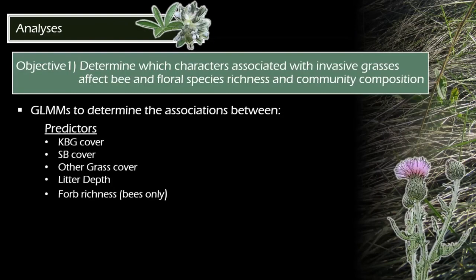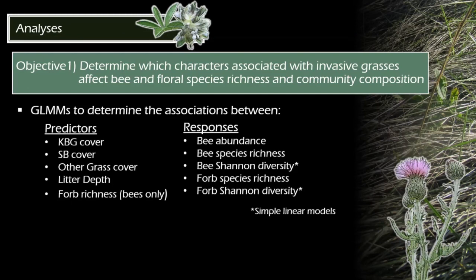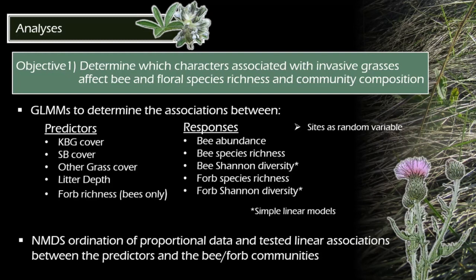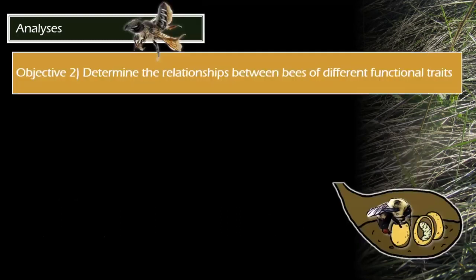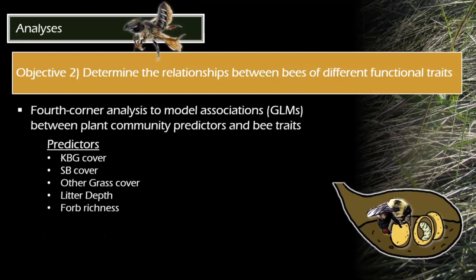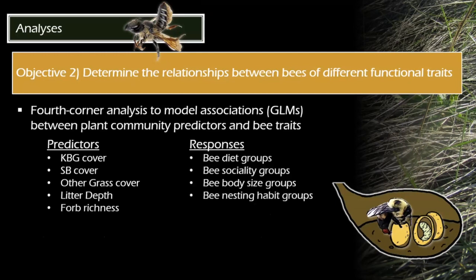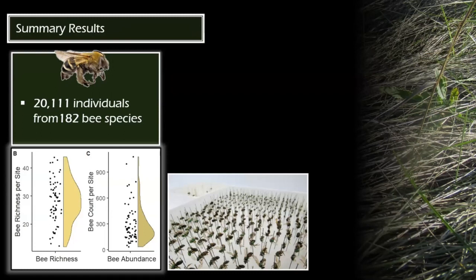For the first objective, we used generalized linear mixed models to see associations between invasive grasses, litter depth, and forb richness with bee abundance, bee species richness, bee Shannon diversity, forb species richness, and forb Shannon diversity. After seeing those linear relationships, we used ordination methods to determine which predictor variables significantly contributed to the bee community space. For objective two, I used fourth corner analysis — a method to associate environmental variables like grass cover, litter depth, and forb richness with functional groupings of bees based on diet, sociality, body size, and nesting habit.